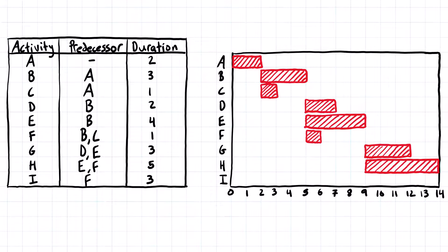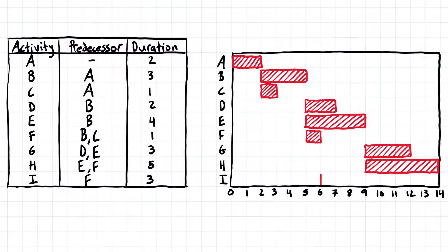And the last activity, I, just has to start after F finishes. So F finishes here at the end of the sixth day — that's where we're going to pick up, it's the beginning of the seventh day — and we're going to come across three days, just like that.